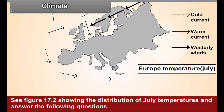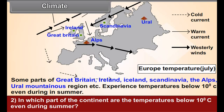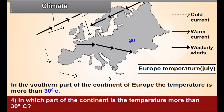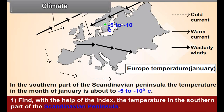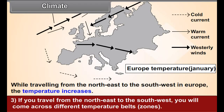Climate. See figure 17.2 showing the distribution of July temperatures and answer the following: 1. Which planetary winds blow from the west of this continent? 2. In which part of the continent are the temperatures below 10 degrees Celsius even during summer? 3. What is the mean temperature in the central region of plains? 4. In which part of the continent is the temperature more than 30 degrees Celsius? See figure 17.3 showing distribution of January temperature: 1. Find, with the help of the index, the temperature of the southern part of the Scandinavian Peninsula. 2. What is the temperature in the northeastern parts?